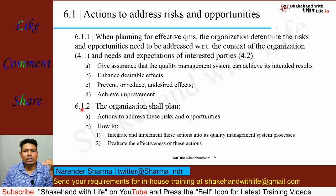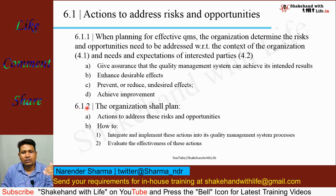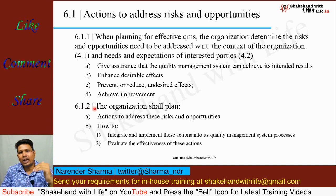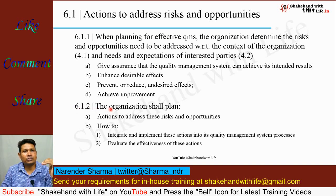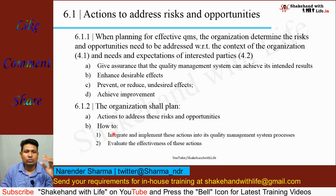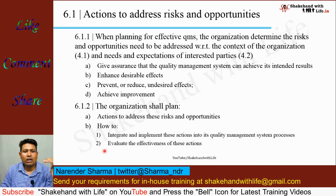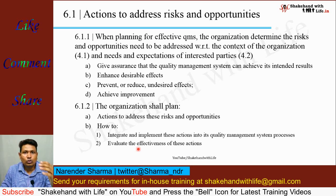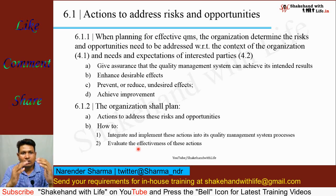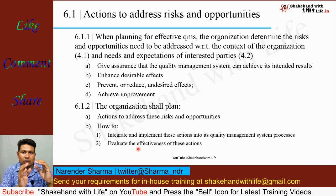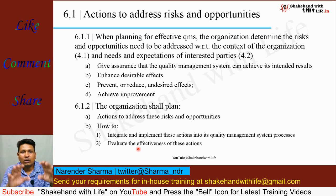Clause 6.1.2 is about planning the actions to address risks and opportunities. The organization shall plan: (a) actions to address these risks and opportunities, and (b) how to integrate and implement these actions into its QMS processes. The second part involves evaluation of the effectiveness of these actions to make the quality management system effective.